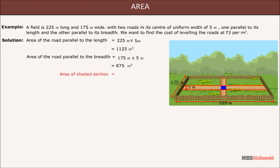Area of the shaded portion is equal to 5 × 5, that is equal to 25 m². So the area of the two roads is equal to 1125 + 875 - 25 m², that is 1975 m².